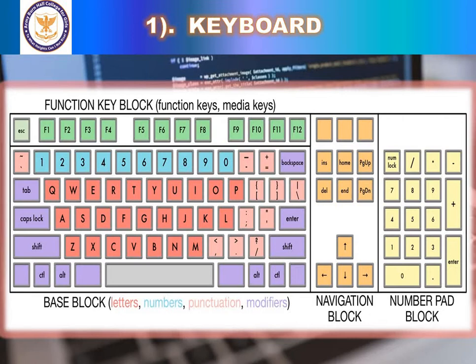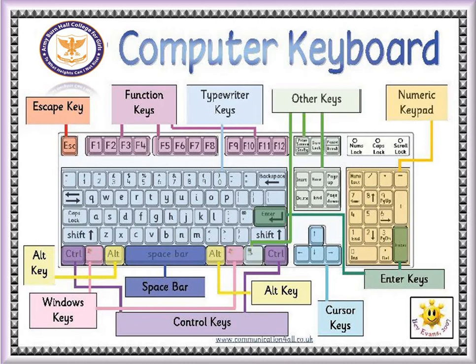The Delete key deletes one character or space to the right of the cursor. It also deletes an entire selection — if you select a sentence and press delete, the whole sentence is removed. The Scroll Lock key causes lines of text, not the cursor, to move; when active, the scroll lock indicator lights up. The Pause key causes the screen to pause when information is scrolling off the screen.